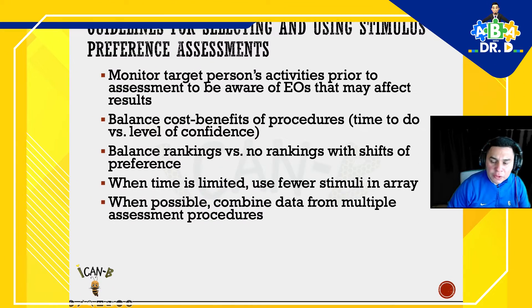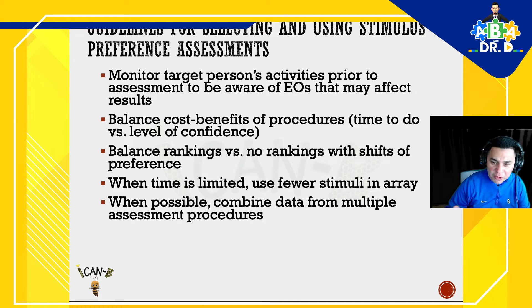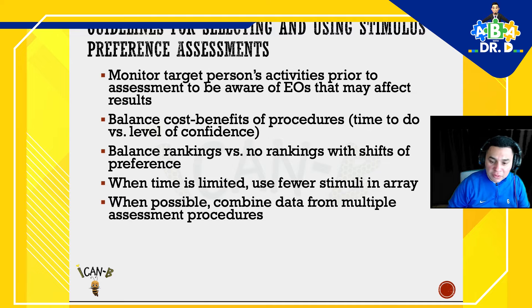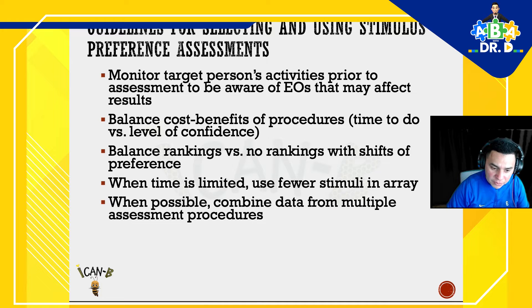Additional steps: if using toys, put the chosen toy back in the array after 15 to 30 seconds. If using edibles, replace the chosen edible with an identical one. This way, for every trial you have the same number of items and the array always includes the most recently selected item. Repeat steps four through seven until each item has been presented at least twice, or until the child refuses to make any further selections. Guidelines: monitor the target person's activities prior to assessment to be aware of establishing operations that may affect results. Balance the cost-benefit of procedures — time versus level of confidence. When time is limited, use fewer stimuli in the array, and when possible combine data from multiple assessment procedures.